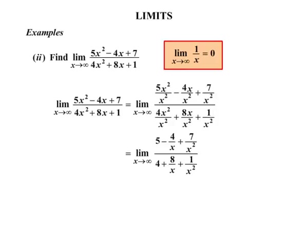Applying this limit: if x is on the bottom and x is very large, the result becomes very small. For example, 1 divided by a million is tiny, and 1 divided by 10 million is even smaller. So any number divided by a huge number approaches zero. That means 4 over x approaches zero, 7 over x squared approaches zero, 8 over x approaches zero, and 1 over x squared approaches zero. We're left with just 5 over 4. That is our answer: 5 over 4.